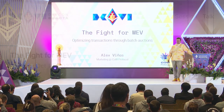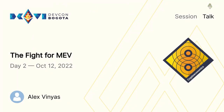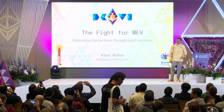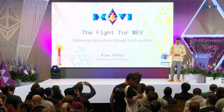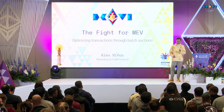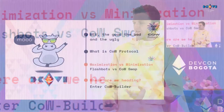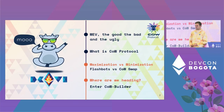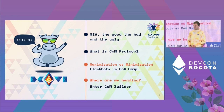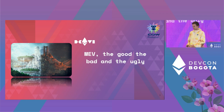Hello everyone, excited to be here talking today on the Patreon of Zaragoza. I'm Alex Viñas, marketing manager at CoW Protocol, and today I'm going to talk about how CoW Protocol reduces MEV by optimizing transactions through batch auctions. I've broken down the talk into four topics: MEV - the good, the bad and the ugly; what is CoW Protocol; the difference in the mindsets of maximization versus minimization; and lastly, where are we heading.